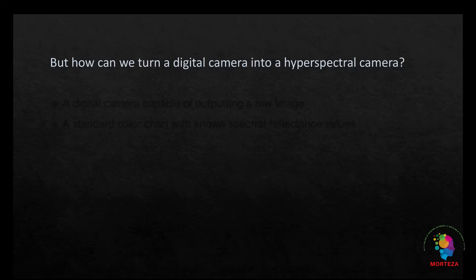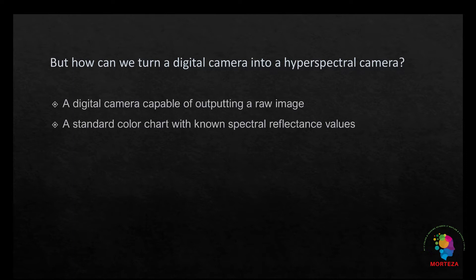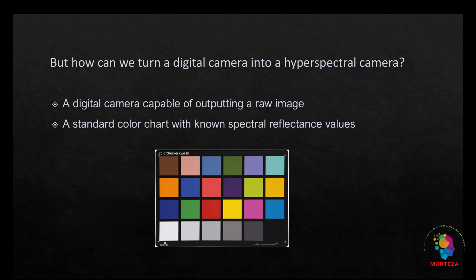We need to have a camera that is capable of outputting raw images and also a standard color chart with known spectral reflectance values. There are a few stages that should be taken, which are explained as follows. Mathematical equations are presented making the understanding of this process easier. The mathematical equation could also help you code the process very easily, either in MATLAB or Python.